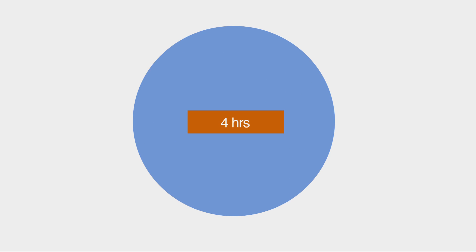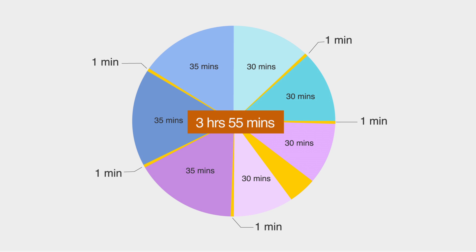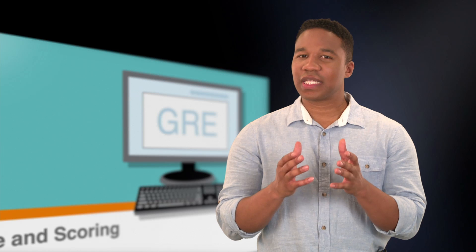Expect to be at the testing center for about four hours, during which you'll work through seven testing sections. You get a one-minute break after each section, except for the third section, where you get a scheduled break of ten minutes. This adds up to a total of three hours and 45 minutes to answer the test questions. Remember that your allotted break times are the only ones that do not take away from your testing time, so make sure to use them well.